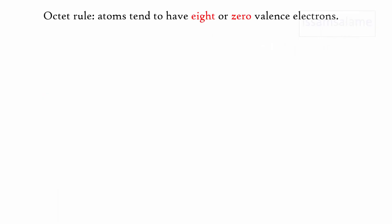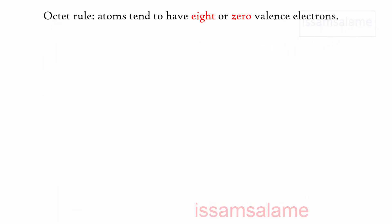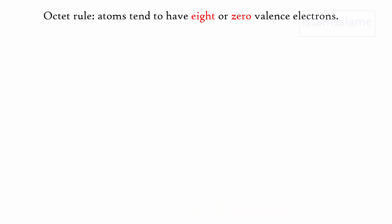The octet rule states that atoms tend to have 8 or 0 valence electrons, which means that for atoms to be stable, they try to have either 8 electrons in their outer shell or 0 electrons in their outer electronic shell.